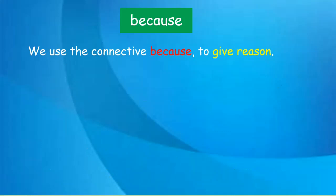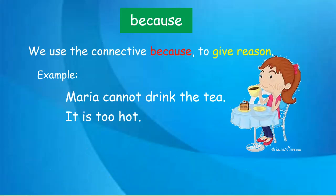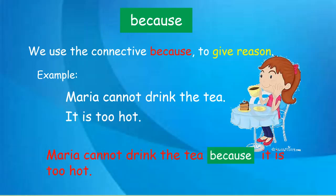Now let us do the connective 'because'. We use 'because' to give a reason. Here we are giving a reason — answering the question 'why'. Maria cannot drink the tea because it is too hot. We write 'Maria cannot drink the tea', then instead of a full stop we write 'because', then continue: 'it is too hot.' We do not start the second part with a capital letter and do not put a full stop after the first sentence.